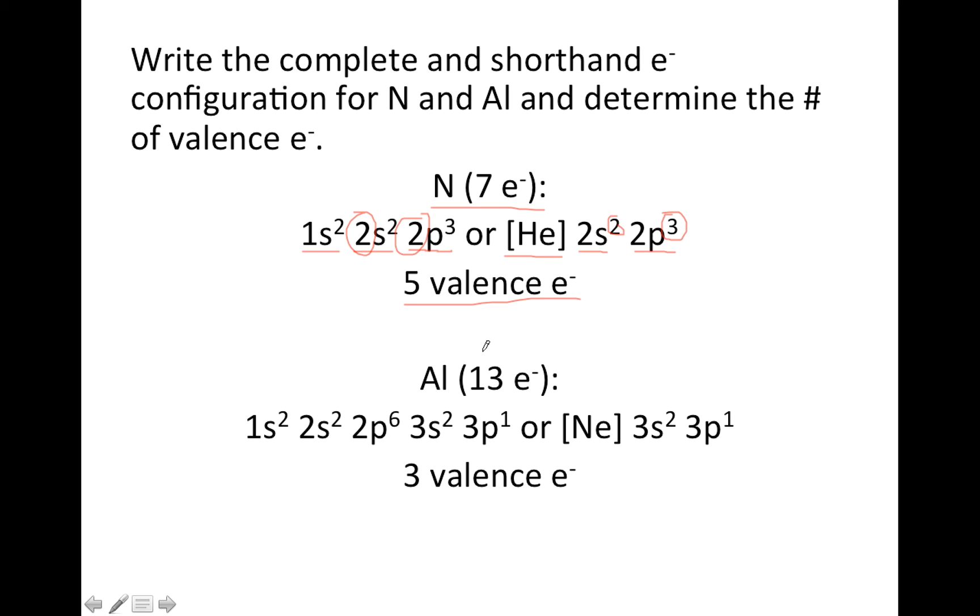And then aluminum, 13 electrons, so 1s2, 2s2, 2p6, at that point that's 10. So I've got 3 more to go, 3s2, and then 3p1 gets us 13 electrons.